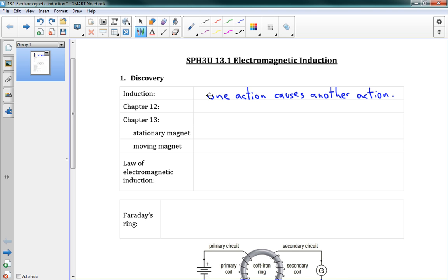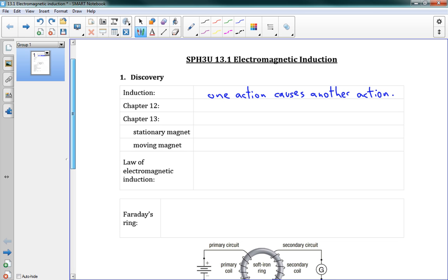So we're trying to see if we can induce electromagnetism. In chapter 12, we saw that current can cause a magnetic field. Or we could say that current induces a magnetic field.